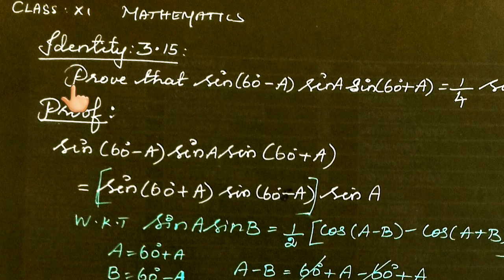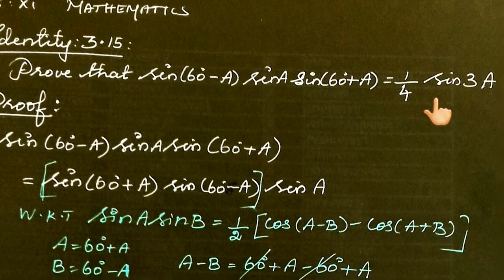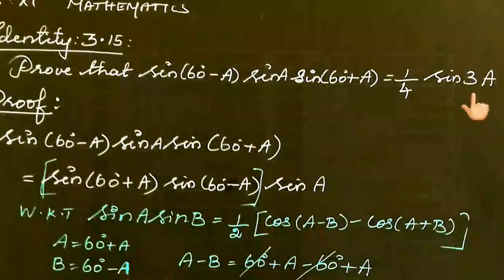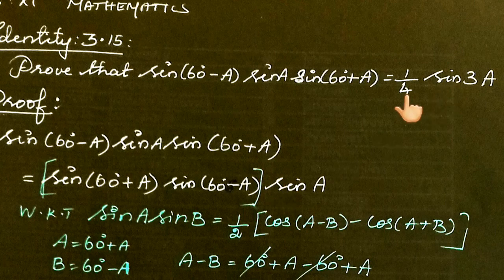Identity 3.15: Prove that sin(60-A) × sin(A) × sin(60+A) = 1/4 sin(3A). We take the left-hand side, simplify it, and show it equals the right-hand side. This is an identity.